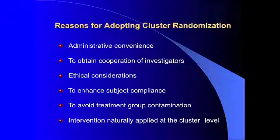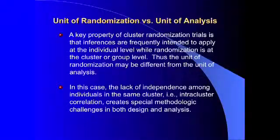There are also interventions that naturally must be applied at the cluster level. This includes mass education trials where messages to stop smoking on billboards are put into a citywide locale. Water fluoridation trials are another example, where it would be difficult to fluoridate some homes in a district but not others. A key statistical property is that inferences are frequently intended to apply at the individual level, while randomization is at the cluster level — so the unit of randomization may differ from the unit of analysis. This differs from classical statistical analysis, where the unit of randomization always tended to be the unit of analysis.